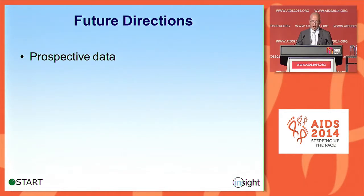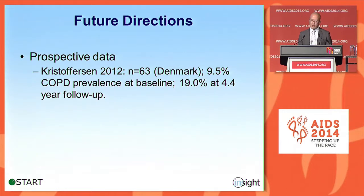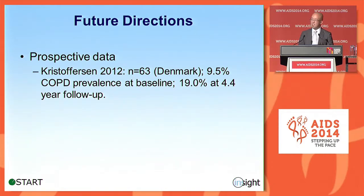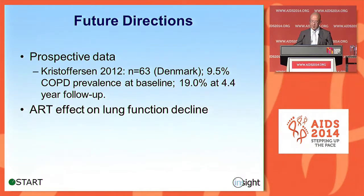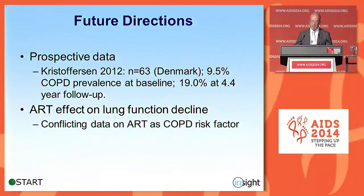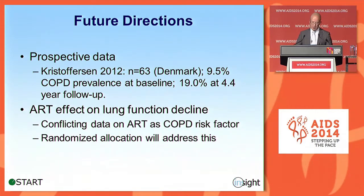In terms of future directions, our prospective data will be quite important. This is highlighted by one small single-center study of 63 patients where spirometry at baseline found 9.5% prevalence of COPD, and then on average about four and a half years later, that COPD prevalence had actually doubled to 19%. Our prospective data will lend a lot more and allow us to validate these initial findings. We'll also be able to look at the effect of antiretroviral therapy on lung function decline, given conflicting data about whether ART may be driving COPD or protecting from it. The randomized allocation within START will allow us to address this.